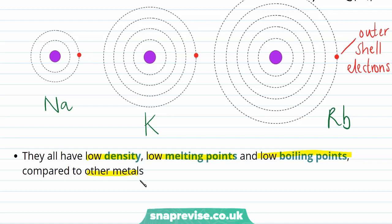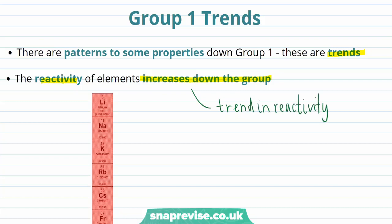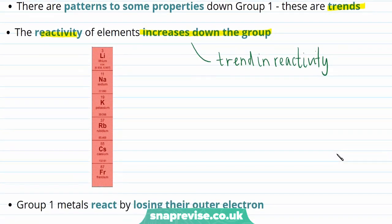Now we know what the Group 1 metals are, we can start to think about some differences between them. In chemistry, we call rules or patterns that follow for a set of elements trends. For example, for the Group 1 alkali metals, the reactivity of the elements increases as you travel down the group — this is known as the trend in reactivity. What this means is if you write out the Group 1 elements in the order that they appear in the periodic table, the most reactive Group 1 metal will be found at the bottom, as reactivity increases from lithium to francium.